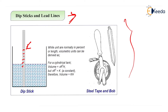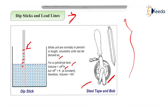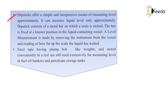Units are normally in percent or length; volumetric units can be derived for cylindrical tanks to measure volume. This shows the steel tape or bob type of liquid measurement. In this dipstick there are flexible lines fitted with an end weight. Lead lines have been used for centuries by seafaring men to gauge the depth of water under their ships. Steel tapes with plumb-bob-like weights, stored on a reel, are still used extensively for measuring fuel oil bunkers and petroleum level gauges. It offers a simple and inexpensive means of measuring level.